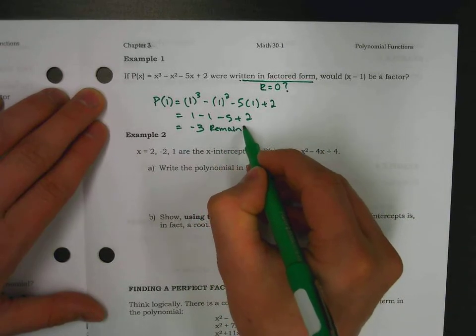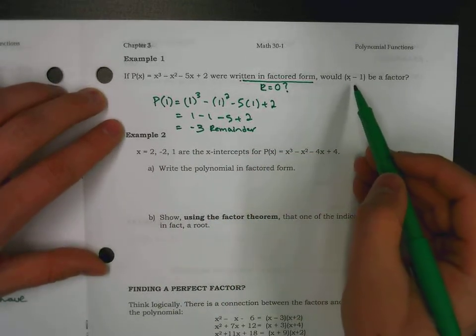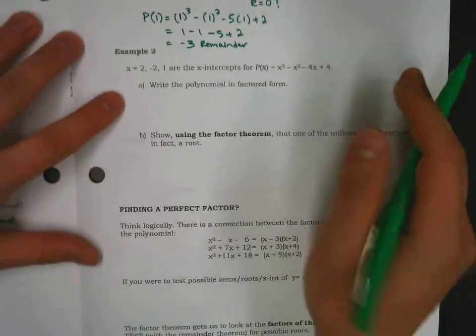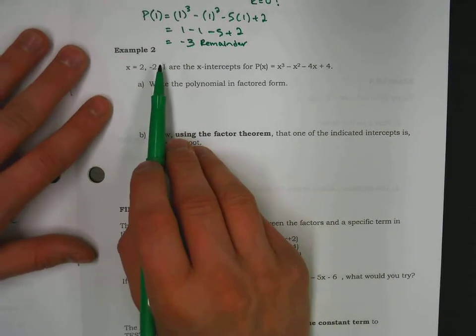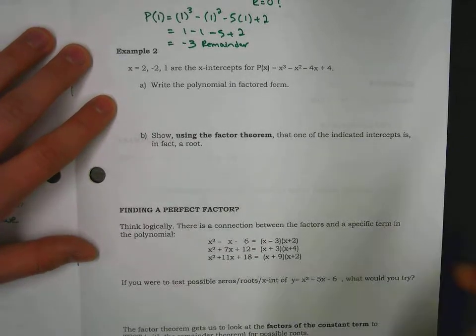The remainder needs to be zero. So, in fact, we might have to try a different binomial, we might have to try some more synthetic division, or maybe it's not even factorable. Let's move on and see a few more different styles and keep building up some strategies in the factor theorem.